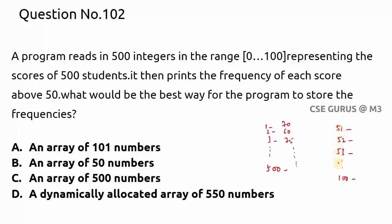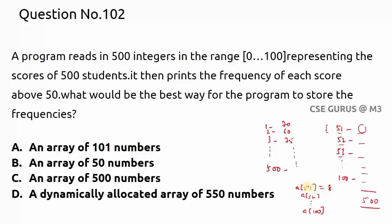We need one count value for each score from 51 to 100. We could use array indices a[51], a[52], ..., a[100], which would require an array of maximum size 101. But is there a better way? Yes — instead of starting from index 51, we can start from a[0], where a[0] represents the count for score 51, a[1] for score 52, and so on.